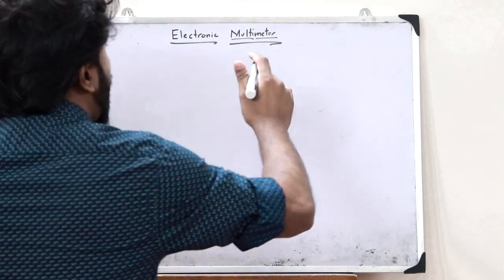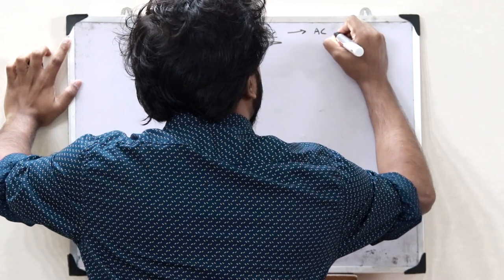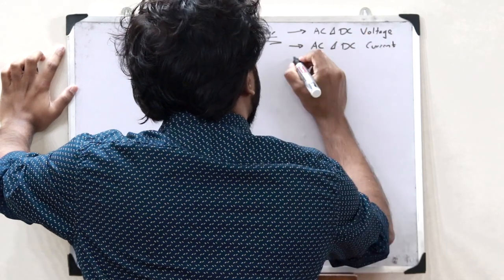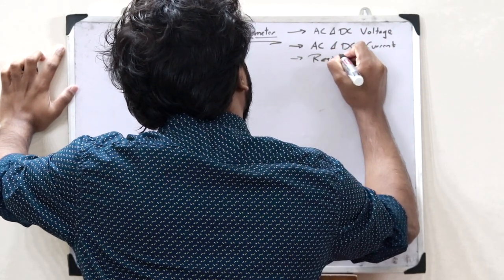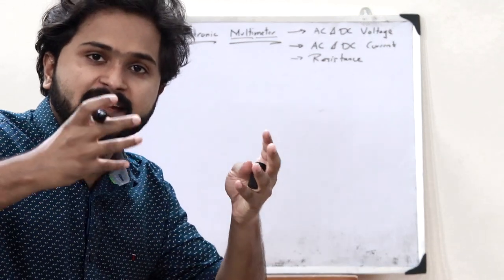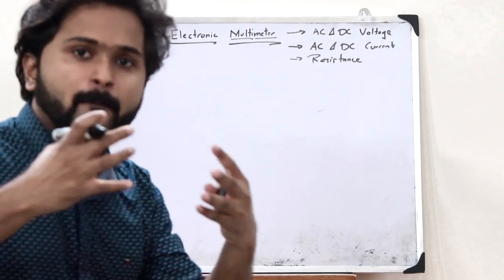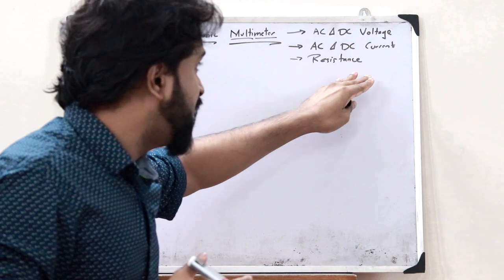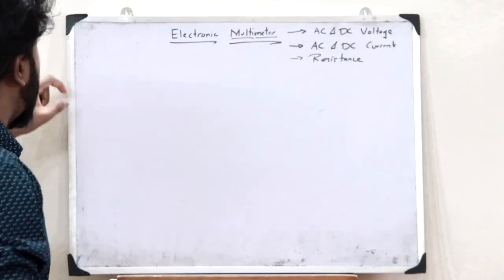The multiple quantities that can be measured are: it can measure the AC and DC voltage, it can measure the AC and DC current, and it can also measure the resistance. So an electronic multimeter is basically an electronic device used for measuring multiple quantities such as AC and DC voltage, AC and DC current, and even the resistance of a particular object.